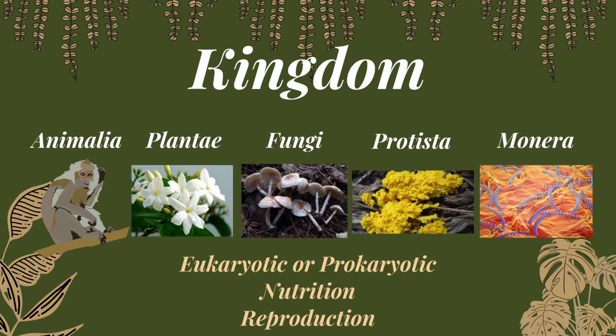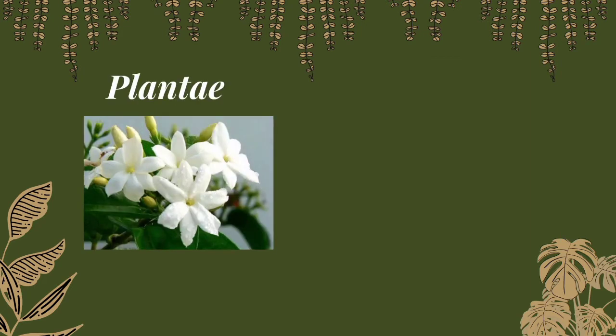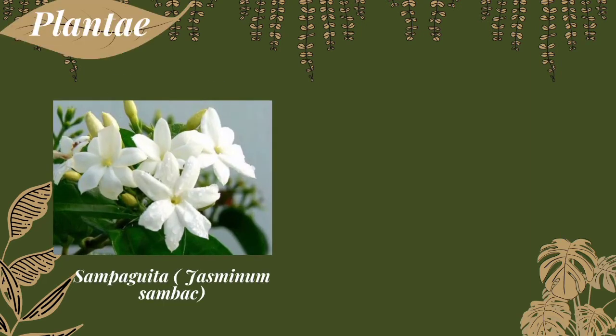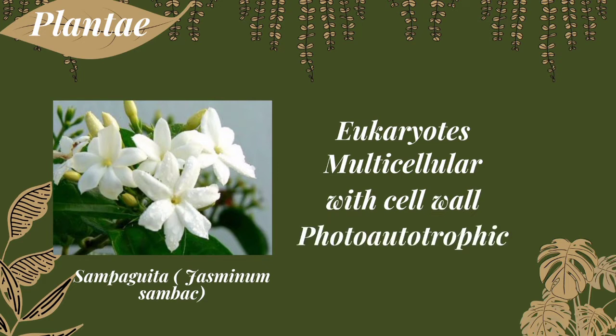Next is the kingdom Plantae. Plants are classified in this kingdom, and there are 500,000 known plant species in the world. Kingdom Plantae is eukaryotic and multicellular, same as animals, but with a cell wall, and they gain nutrition by being photo-autotrophic, or getting food from sunlight.